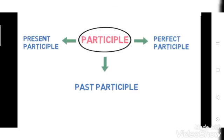Now, there are three kinds of participle. The first is present participle, second is past participle, and third is perfect participle.